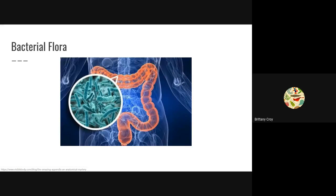The large intestine is also important because it contains what we call bacterial flora — basically thousands of different types of bacteria that live in our large intestine. They help us absorb some types of vitamins and break down foods that we otherwise couldn't. The bacteria perform fermentation on starches like beans that we can't digest, and a byproduct of fermentation is gas, so all of us pass gas every single day — close to 500 mils.